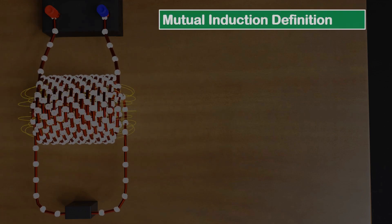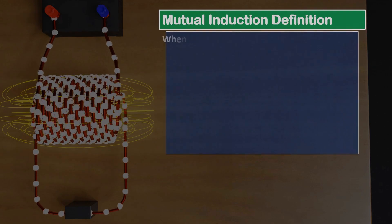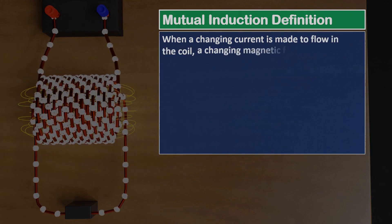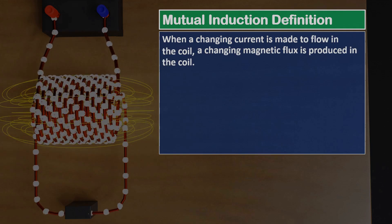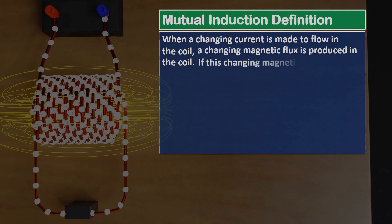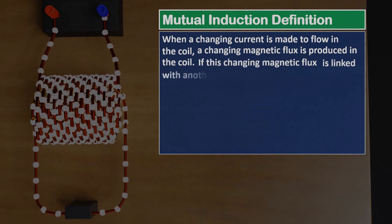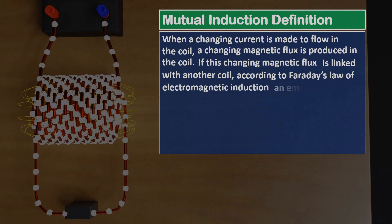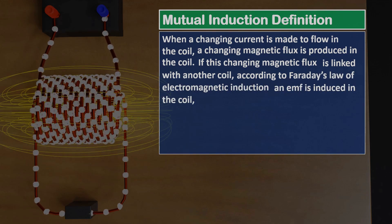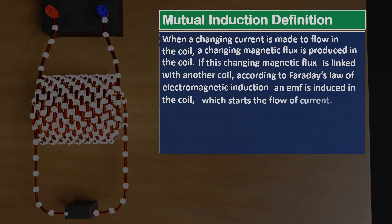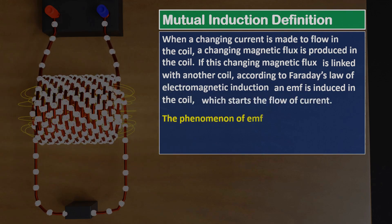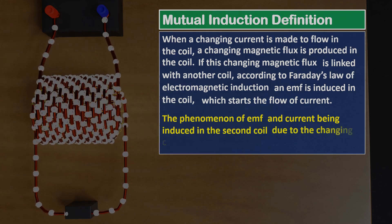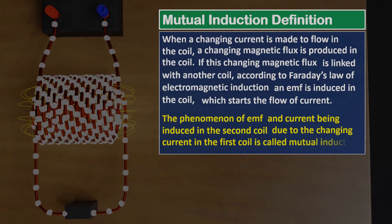Now let's define mutual induction more precisely. When a changing current is made to flow in one coil, a changing magnetic flux is produced in the coil. If this changing magnetic flux is linked with another coil, according to Faraday's law of electromagnetic induction, an EMF is induced in the coil, which starts the flow of current. The phenomenon of EMF and current being induced in the second coil due to the changing current in the first coil is called mutual induction.